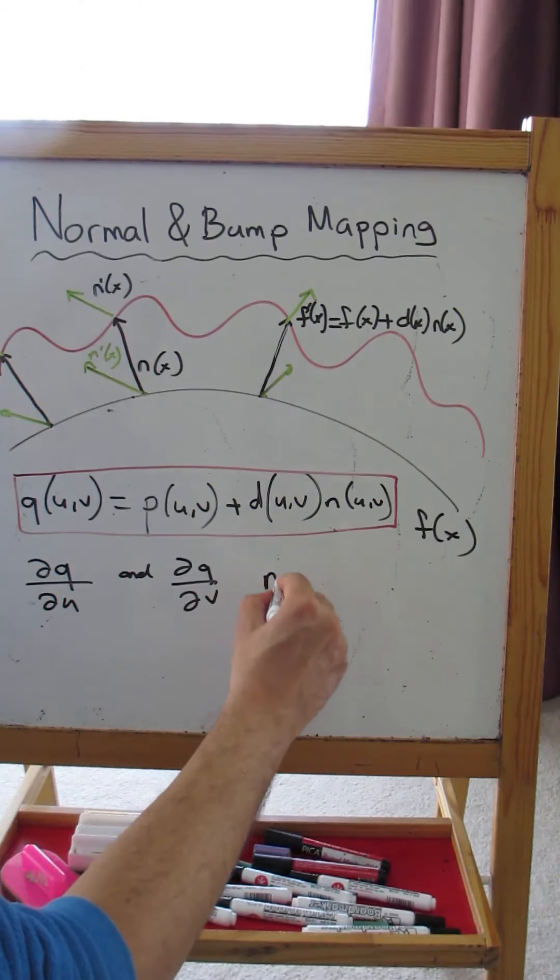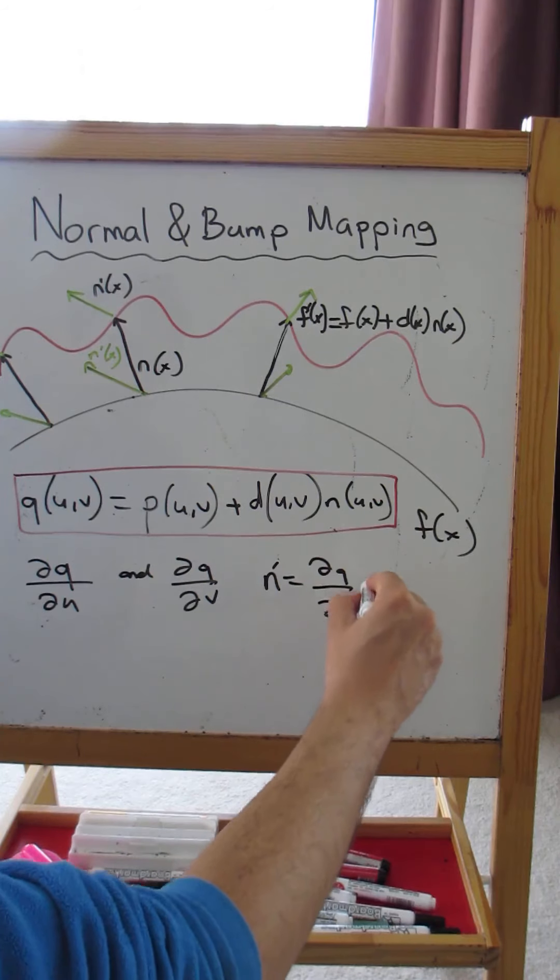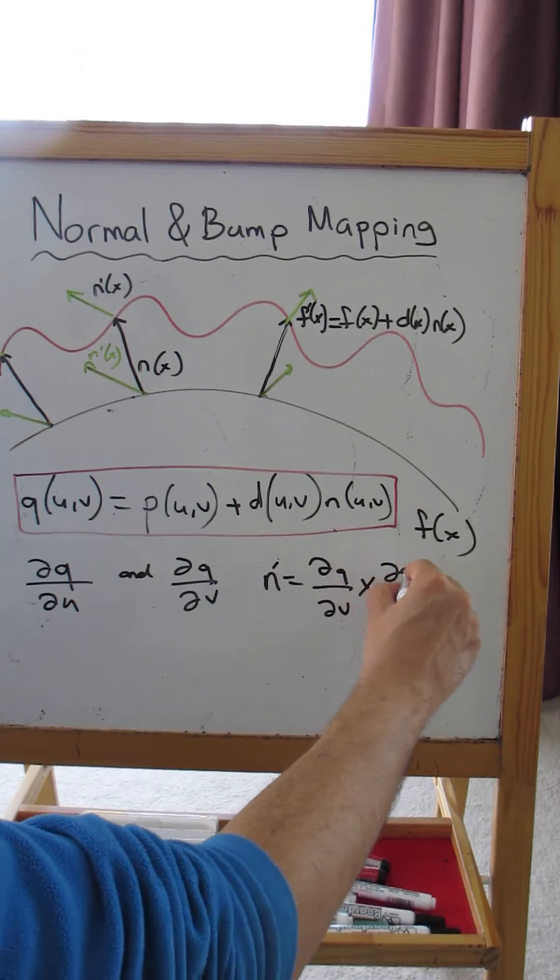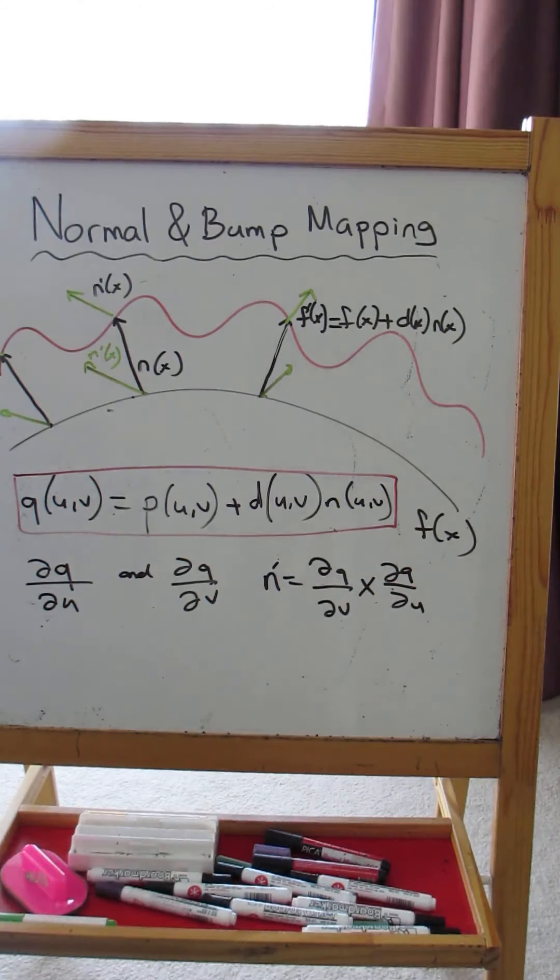Now in this representation, if I compute dQ/du and dQ/dv and take their cross product, the new normal is going to be dQ/dv cross dQ/du. The new normal is going to be like that.